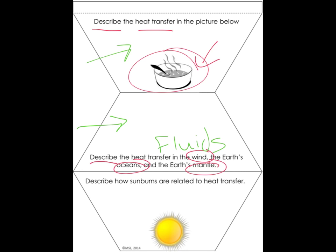Finally, the last one down here says, describe how sunburns are related to heat transfer. So we get burned by the sun, but we're not actually physically touching the sun, but there's a way that this heat gets to us. So right here in this space, you're going to write down whether it's conduction, convection, or radiation, and how you know and how that affects our sunburns.